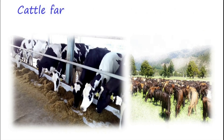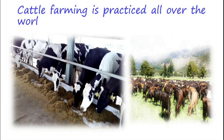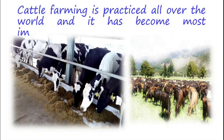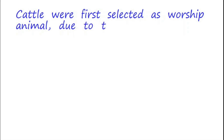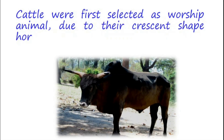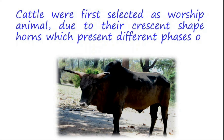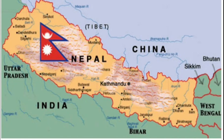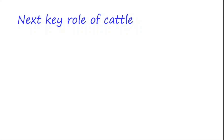Cattle farming is practiced all over the world and has become the most important livestock species. They were first selected as worship animals due to their crescent-shaped horns, which represent different phases of the moon. In some regions, especially Nepal and some states of India, slaughtering of cattle is prohibited due to their sacred status in religions such as Hinduism, Jainism, and Zoroastrianism.